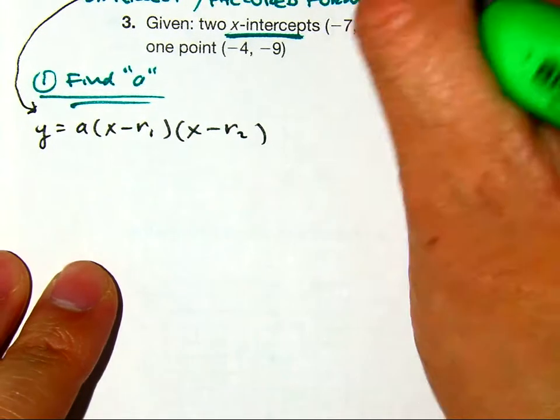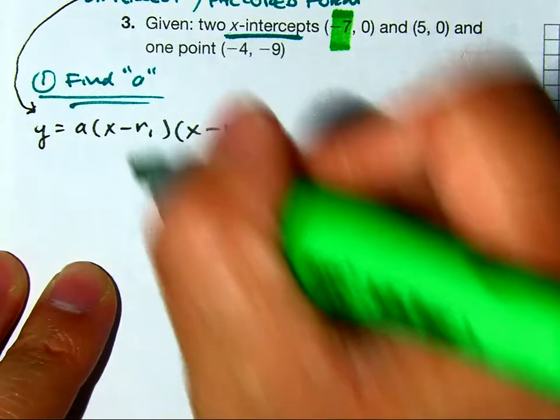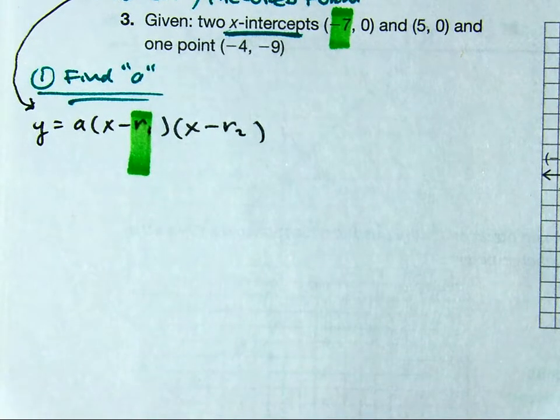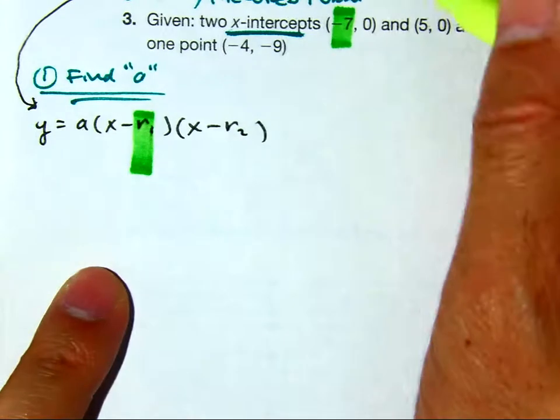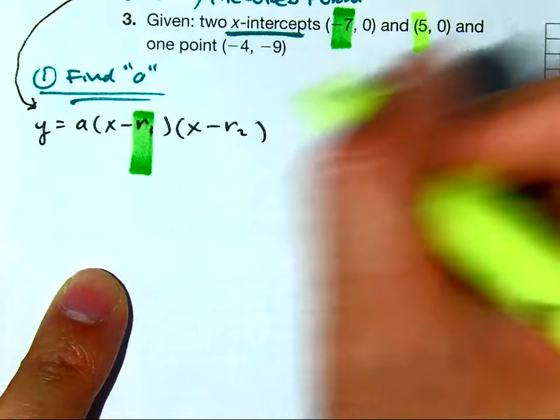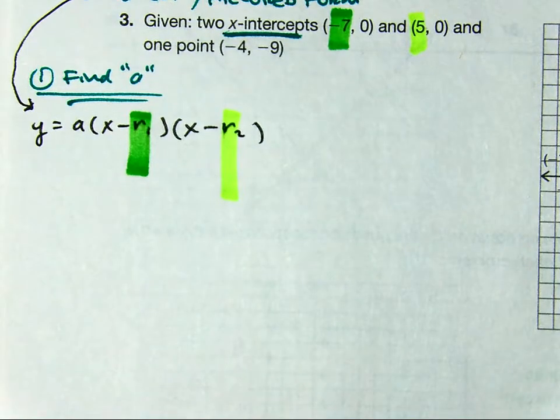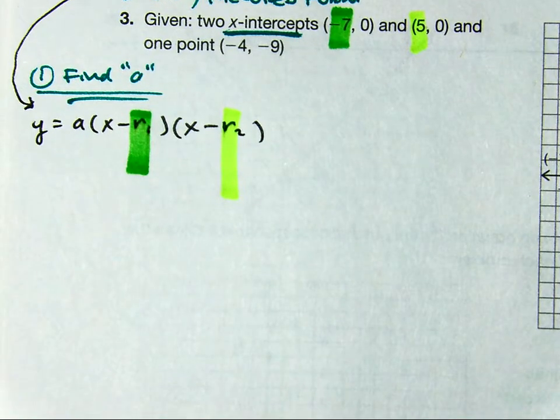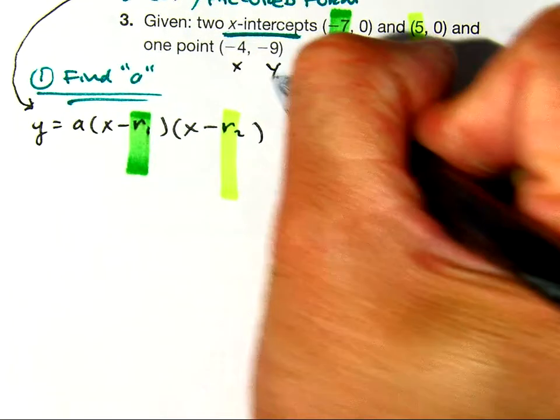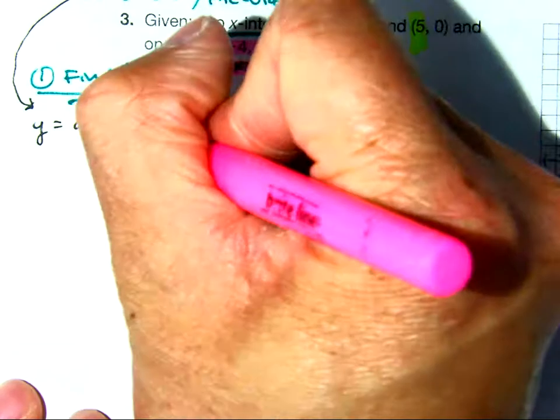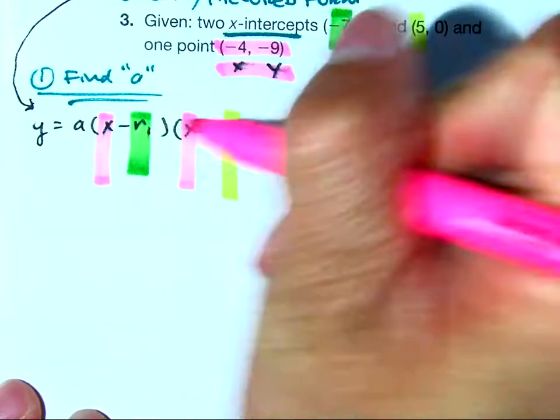Your r1 value is -7. Your r2 value - the r stands for the roots, or the x-intercepts. And then your ordered pair here represents your x and your y. That would go here and here.